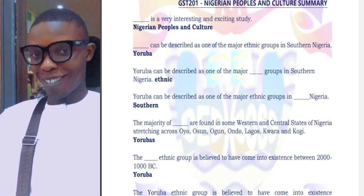Yoruba can be described as one of the major ethnic groups in the southern part of Nigeria. There are others aside from Yoruba that we are going to be studying. The majority of Yorubas are found in some western and central states of Nigeria, stretching across Oyo, Oshun, Ogun, Ondo, Lagos, Kwara, and Kogi.